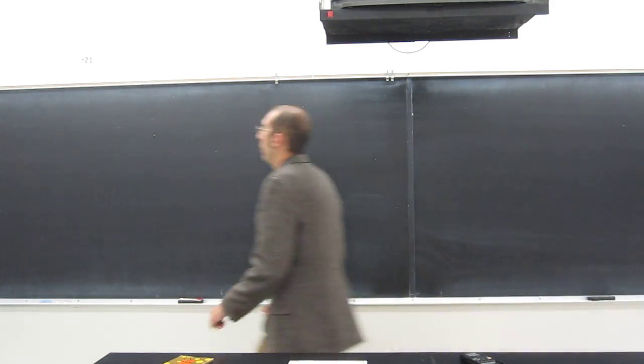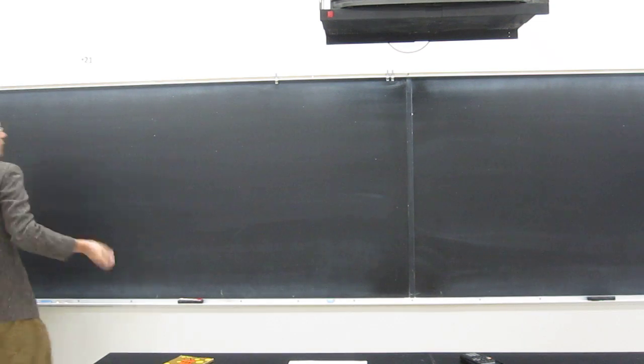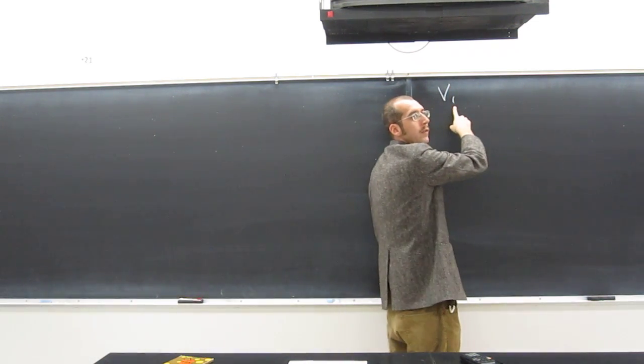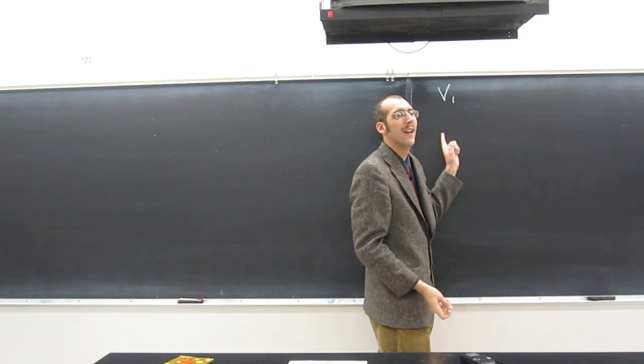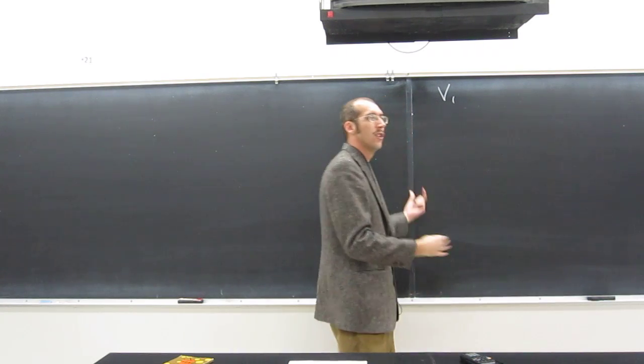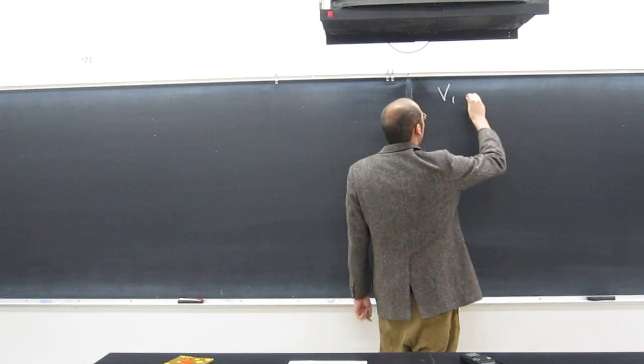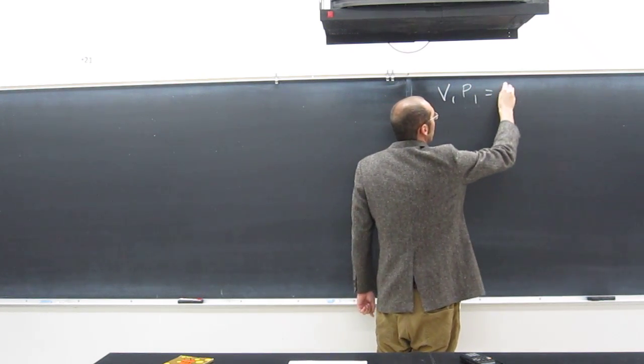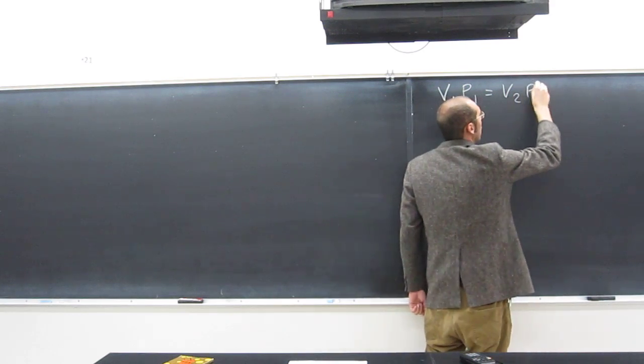Boyle's Law is V-I, here let's do it this way. V-I or V-1, I and 1 are the same. I is initial 1. 1 and 2 I use, but I think the book uses I and F. But V-1, P-1 equals V-2, P-2.